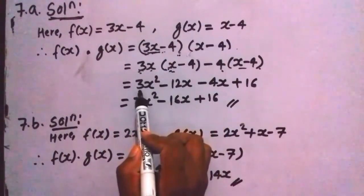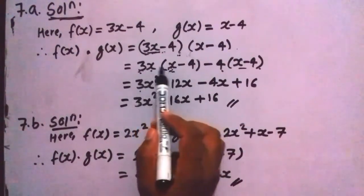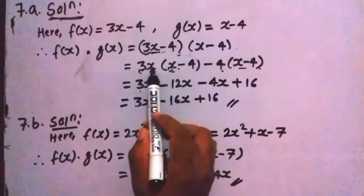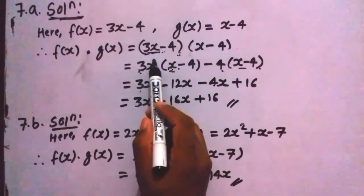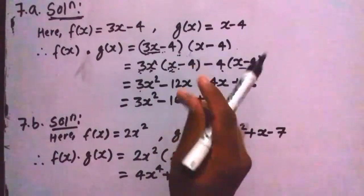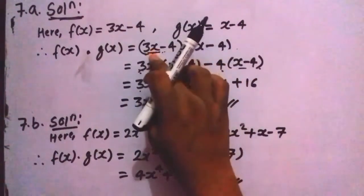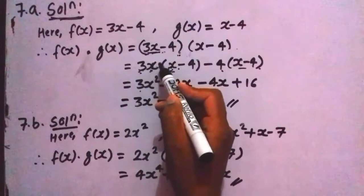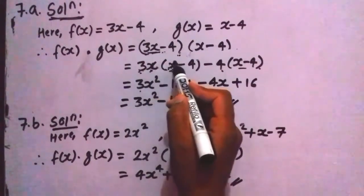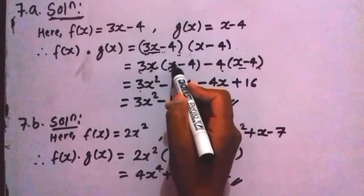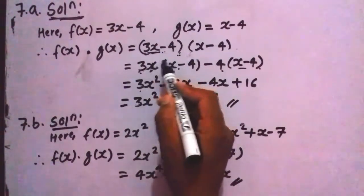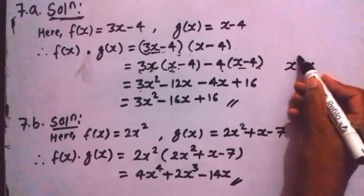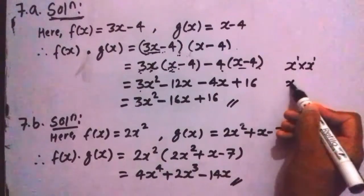So 3 times 1 is 3. When we multiply variables, we have to add their powers. The power here is 1, and here is no power written — if there is no power written, the power is 1. So here is power 1 and here is also power 1. When you add x times x, this power 1 plus 1 gives 2.